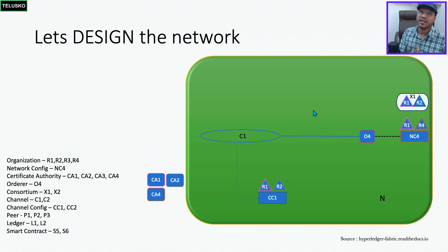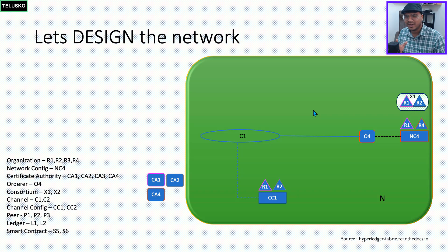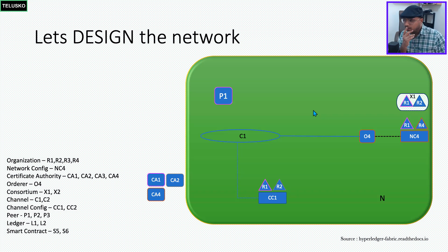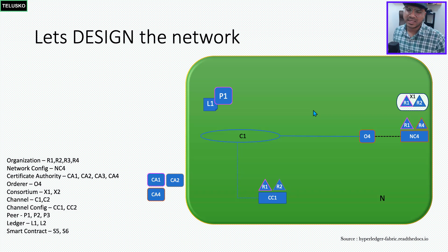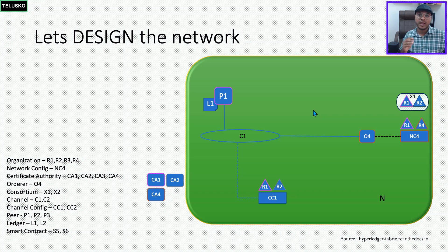Now that we have a channel and its configuration, one organization can have multiple nodes — machines to communicate. In this example, for organization R1, we'll use one node called P1. A node is simply a machine, a computer. P1 will have a ledger, L1, because every node needs to store data — that's the entire purpose of a node. This node will be connected to the channel, so whatever transactions you want to do can be done here.